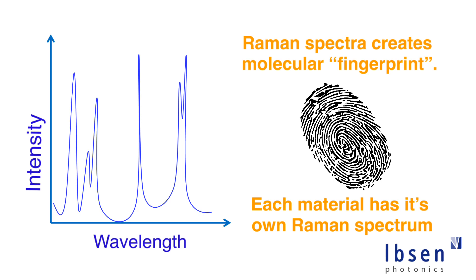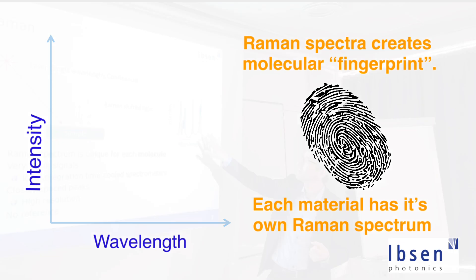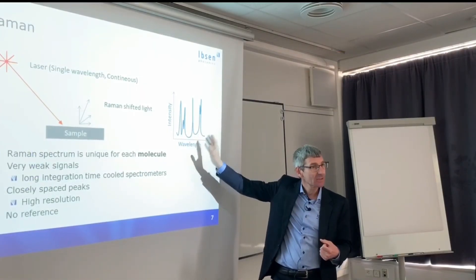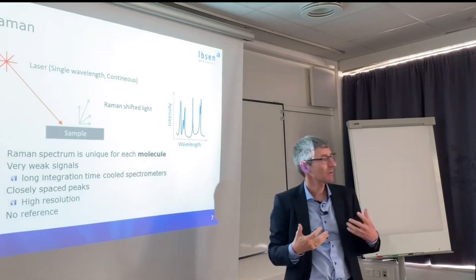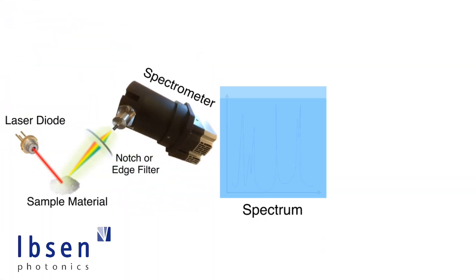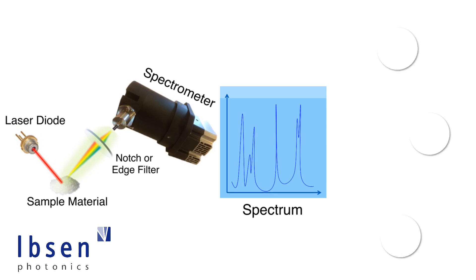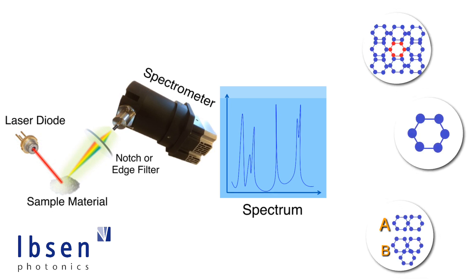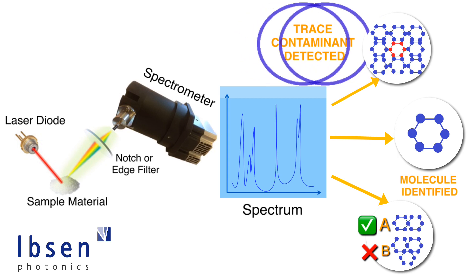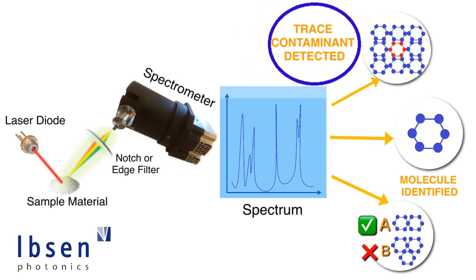So you can use Raman to detect if a material is there or not. That's why it's used a lot in the pharmaceutical industry — and being used more and more. Because what you want is to measure whether the active ingredients are in your pills, or is somebody faking it and just putting chalk or whatever — just white pills with nothing in, or even worse, something that's dangerous for you.